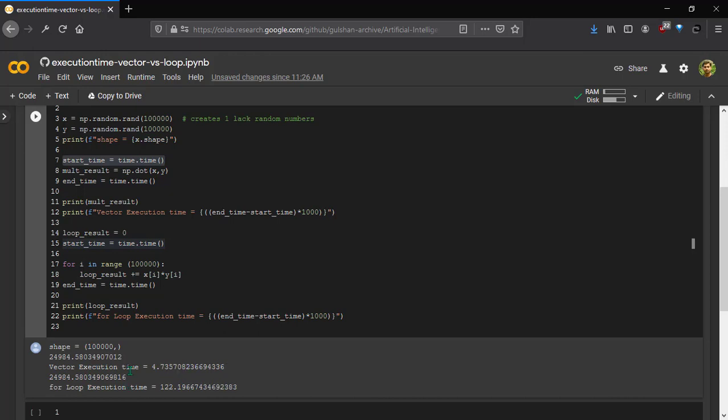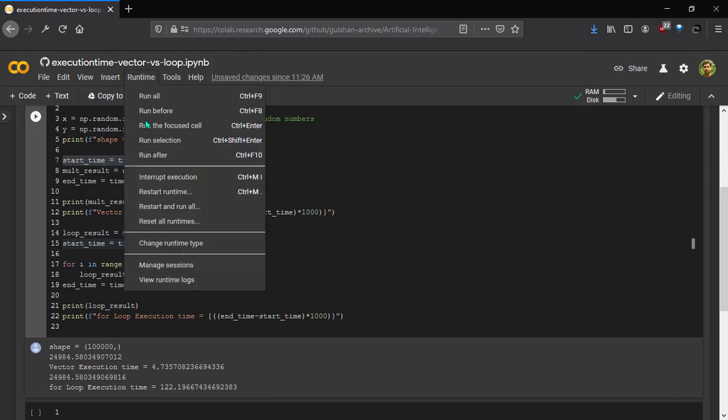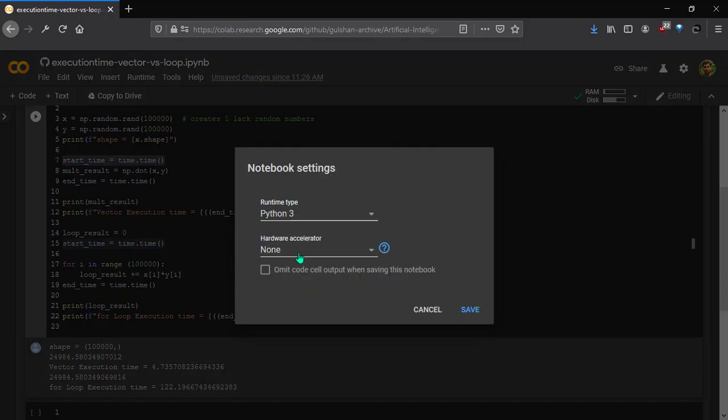From here we can also see that there is a huge variation in vector execution time, whereas for loop execution time it is nearly almost same. This is because we had discussed previously that vectors are making effective use of CPUs and GPUs.